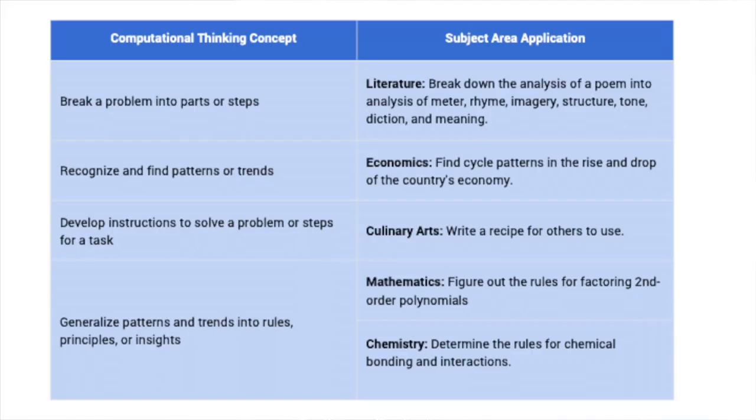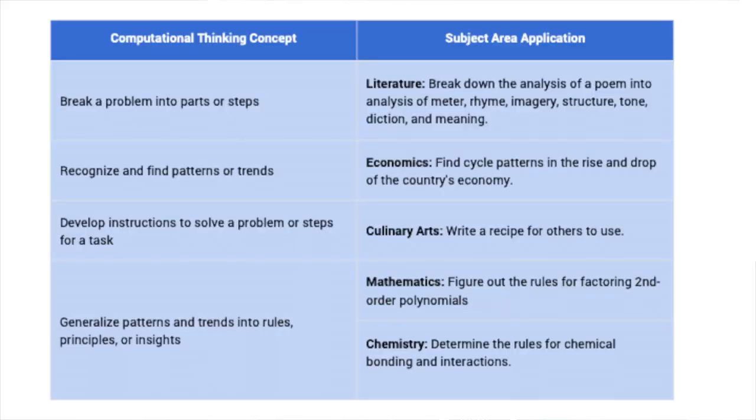We can also recognize and find patterns or trends — in economics, we can find cycle patterns in the rise and drop of a country's economy. What's making things go up or down? Is it purchasing, or something like COVID? Looking at pandemic data and how it affected the economy is a great way to look at pattern recognition. For algorithm design — developing instructions to solve a problem — the culinary arts are a great example: following a recipe to bake bread.